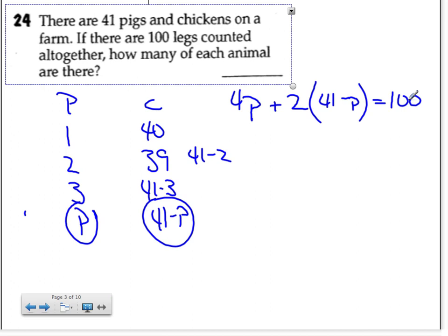Now I can just do the algebra on here. So it's 4P plus 82 minus 2P equals 100, distributing the 2.